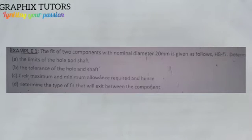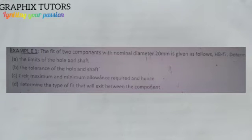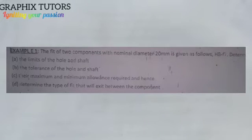Good day once again, my name is Graphics. If you look at the front of the screen, there is a question displayed on it. The question says: the fit of two components with nominal diameter 20mm is given as follows — H8F7. Determine A, the limit of the hole and shaft; B, the tolerance of the hole and shaft; C, their maximum and minimum allowance required; and D, determine the type of fit that will exist between the components.